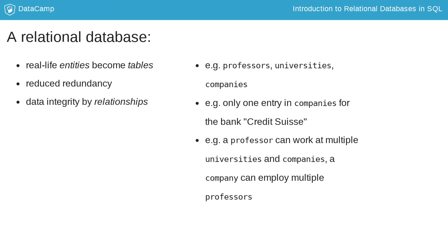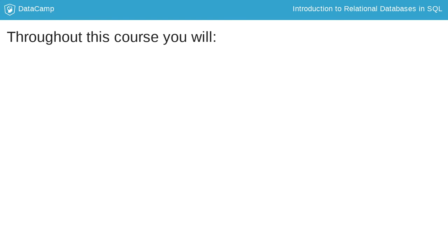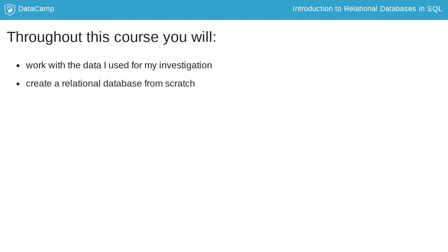You can define exactly how entities relate to each other. For instance, a professor can work at multiple universities and companies while a company can employ more than one professor. Throughout this course you will actually work with the same real-life data used during my investigation. You'll start from a single table of data and build a full-blown relational database from it, column by column, table by table.